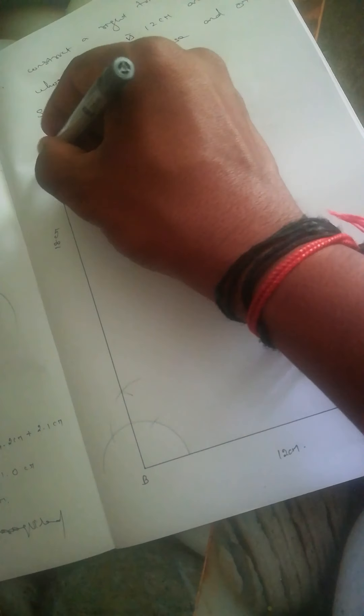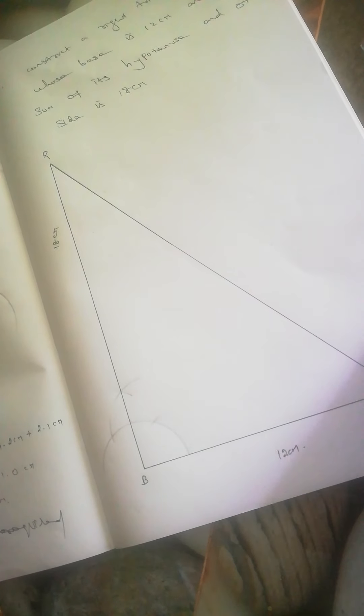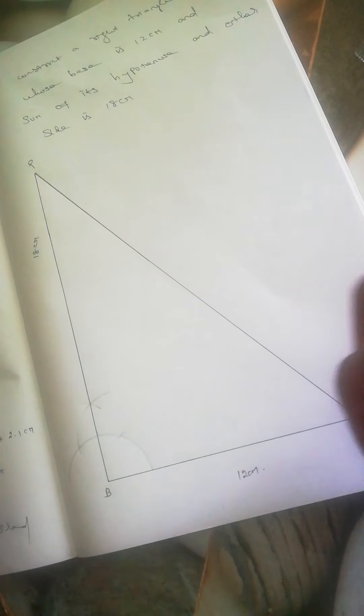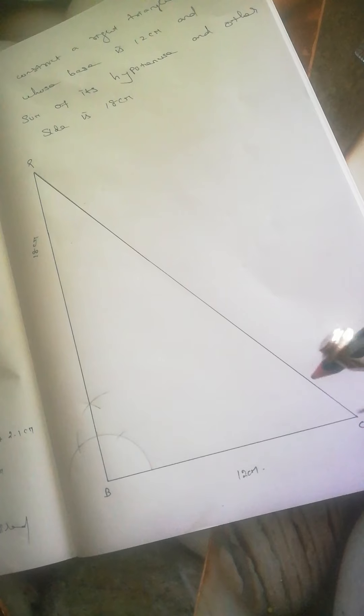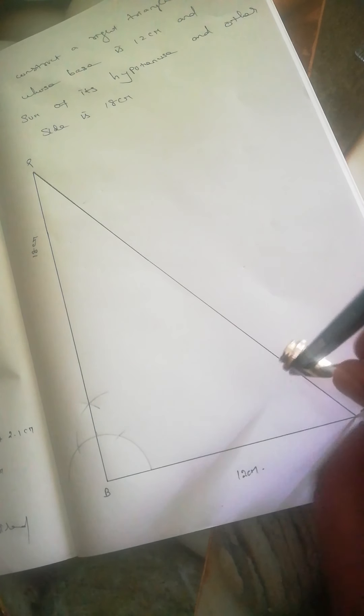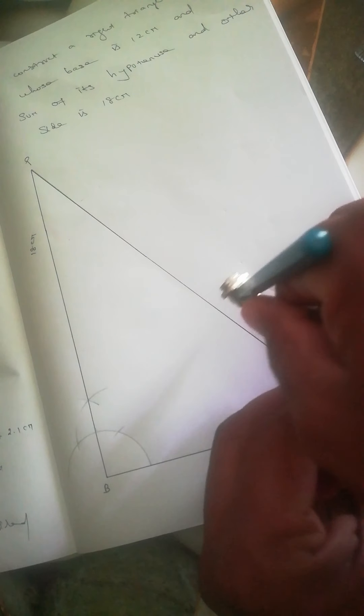Now label point P. We'll draw a perpendicular bisector of line CP, similar to the first exercise. From point C, set your compass to more than half the length. You need at least half, otherwise it's difficult. Cut arcs above and below the line.